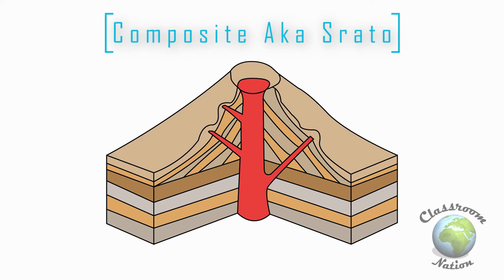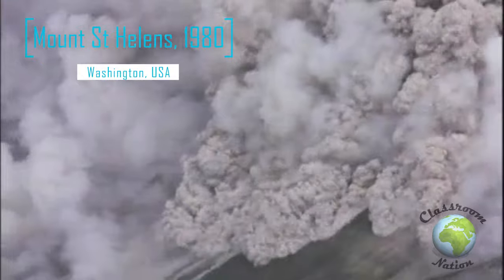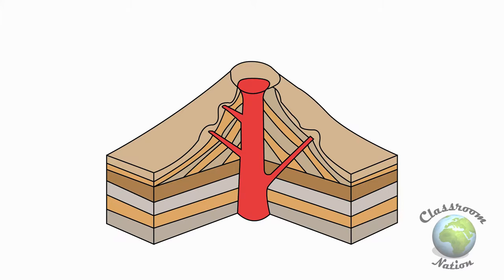Number three: composite volcanoes, also known as stratovolcanoes. Composite volcanoes are reasonably big and can rise up to 8,000 to 10,000 feet, and can range anywhere from one to ten kilometers in diameter. Their eruptions are dangerous and explosive. The pyroclastic materials and gases can reach temperatures of 1,000 degrees Celsius and can travel at 450 miles per hour.